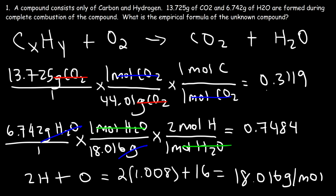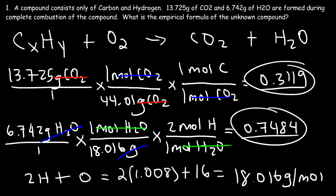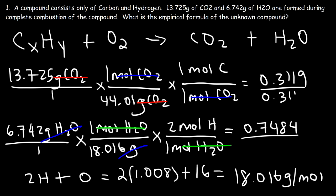Now the last thing we need to do is divide these two numbers by the smallest of what we see here. The smallest is clearly 0.3119. So 0.3119 divided by itself is going to be 1. If we take 0.7484 divided by 0.3119, that's about 2.4 for hydrogen, and for carbon it's 1. So now we can use those numbers as subscripts: C1H2.4.